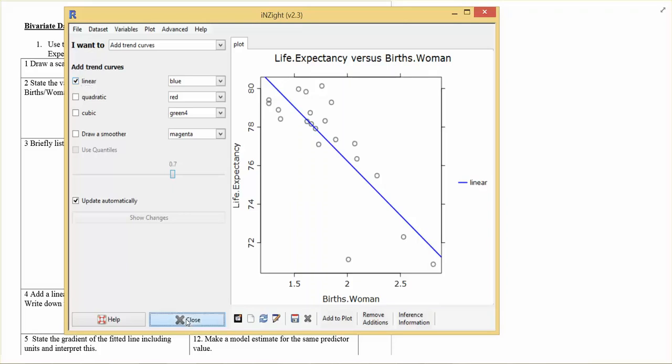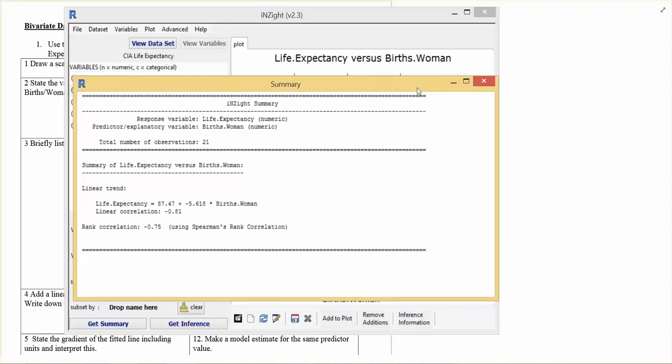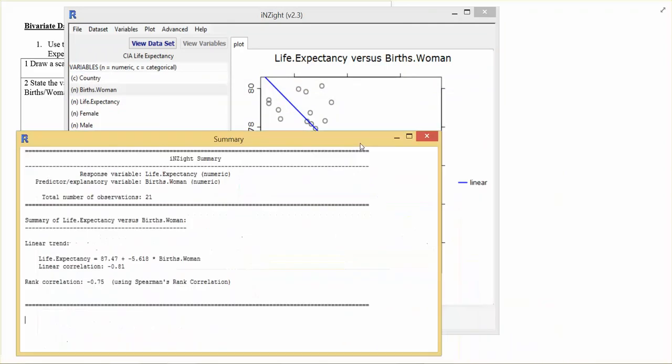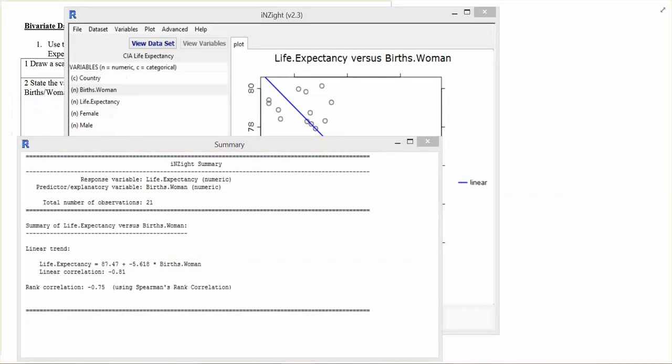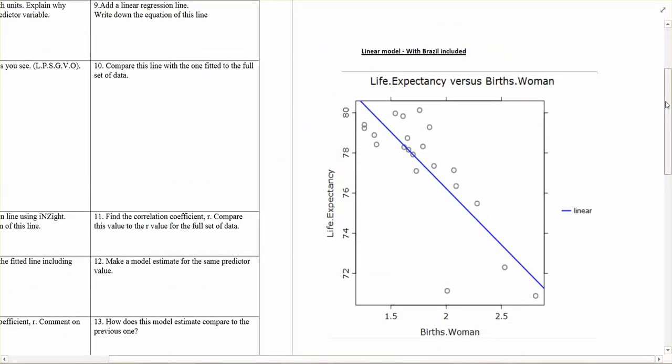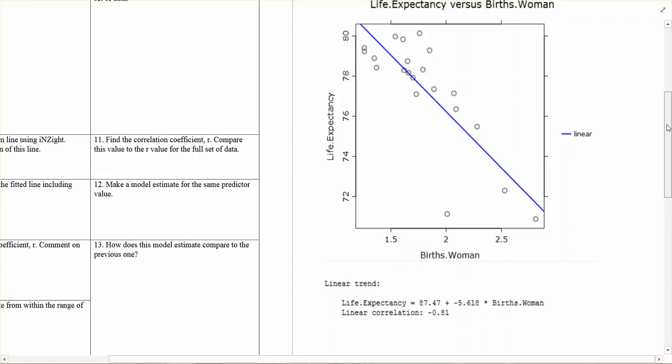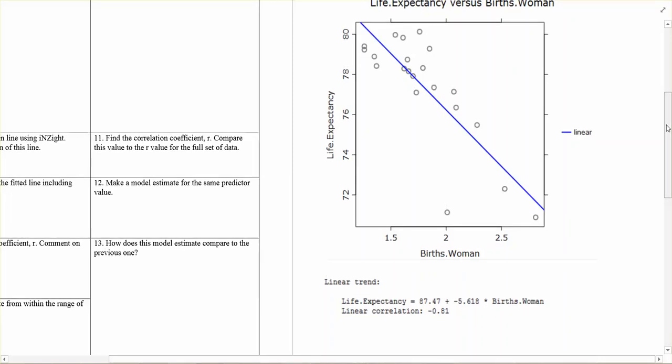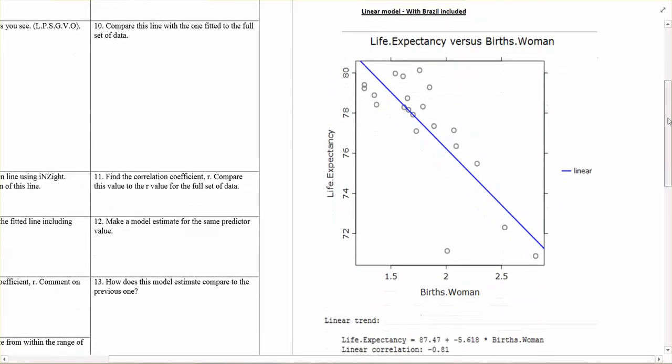And I'm going to close and get summary so I can get the equation and I'm going to put those both into my document I'm typing into. So snipping tool, you can see here the blue line's my linear regression model. I've given the graph a title, I've said linear model with Brazil included, and I've got my equation which is life expectancy equals about 87 minus about 5.6 times x. So the gradient is negative 5.6. Correlation which is the extent to which the points follow a linear association is negative 0.81. So that's a reasonably strong negative correlation.